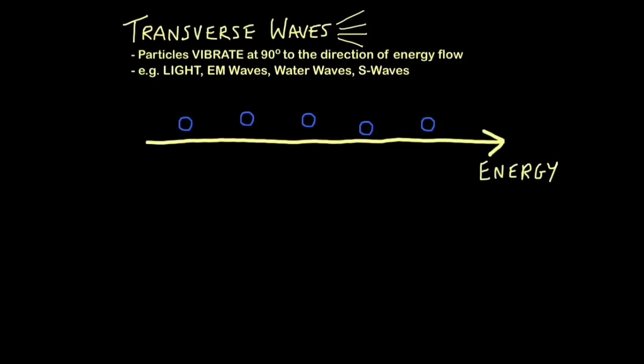Transverse waves - this is when particles vibrate at 90 degrees to the direction of energy flow, just like the water waves I've shown you. Examples which you must know are light, electromagnetic waves. Light is an electromagnetic wave but it's the one which we're most familiar with.